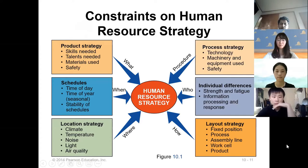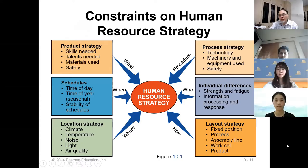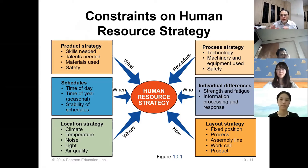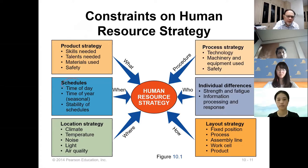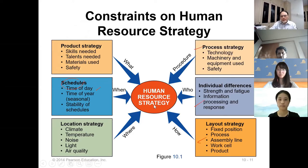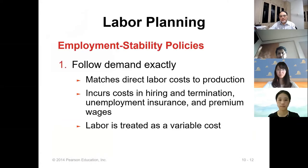We need to have good human resource strategy within our constraints — the product strategy, different products have different skill requirements, materials, location, schedules, time of the year, and so on. Process strategy, individual strengths, layout — all of these must be considered.